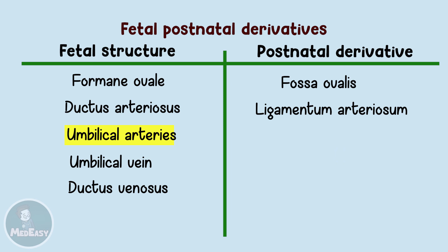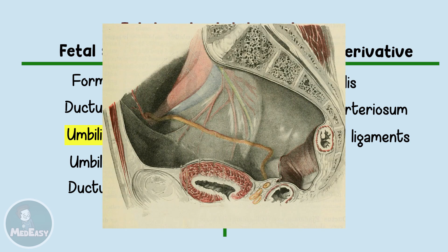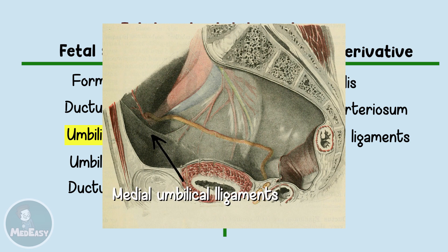As for the umbilical arteries, they will functionally close within minutes after birth, and the lumen will fibrose completely within months. The distal portion of the umbilical arteries forms the medial umbilical ligaments, but proximally the umbilical arteries will remain open as the superior vesicle arteries. So essentially the superior vesicle arteries branch from the internal iliac arteries and their distal portion is occluded as the medial umbilical ligaments. Since the artery is occluded, blood will be rerouted through collateral vessels when it returns to the heart.